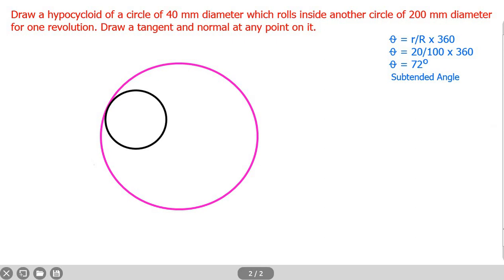In this video, we are going to see about hypocycloid and the procedure to draw hypocycloid with a clear example. The example we are going to take: draw a hypocycloid of a circle of 40 mm diameter which rolls inside another circle of 200 mm diameter for 1 revolution. Also, draw tangent and normal at any point on it.